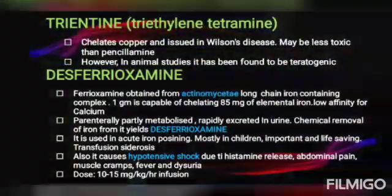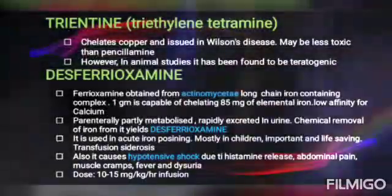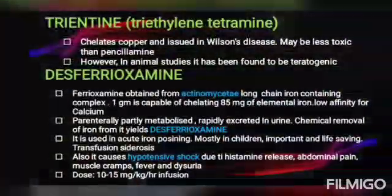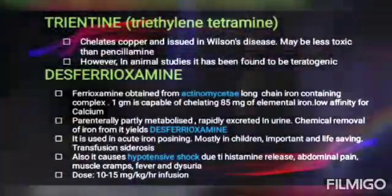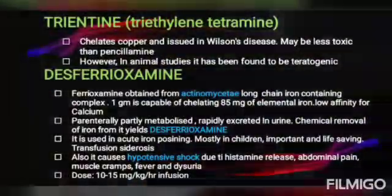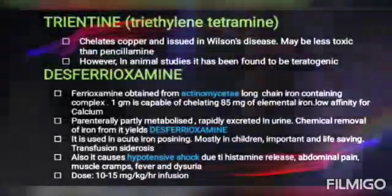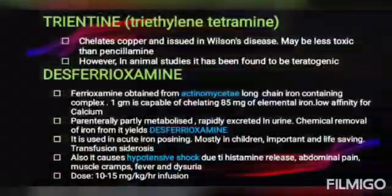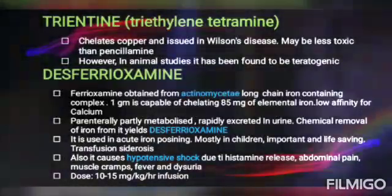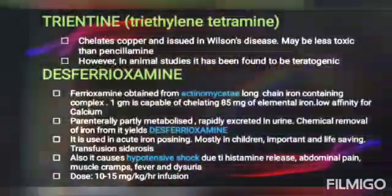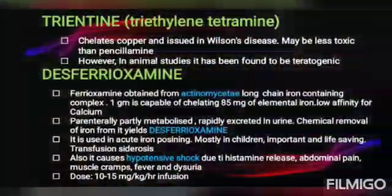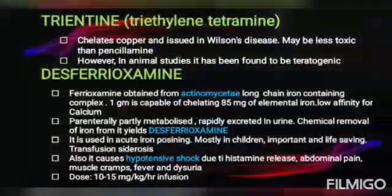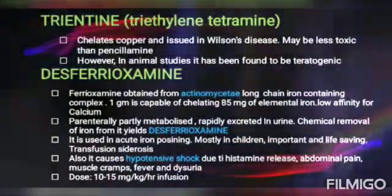The next drug is trientine — triethylenetetramine. It chelates copper and is used in Wilson's disease. It may be less toxic than penicillamine. However, in animal studies it has been found to be teratogenic, meaning it causes abnormal physiological development.